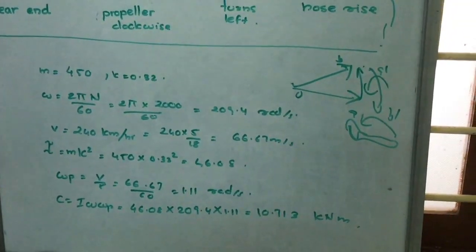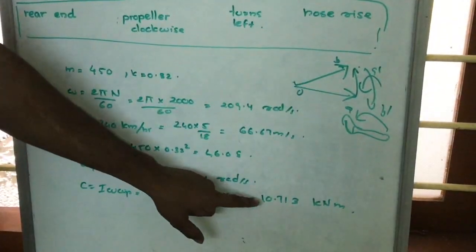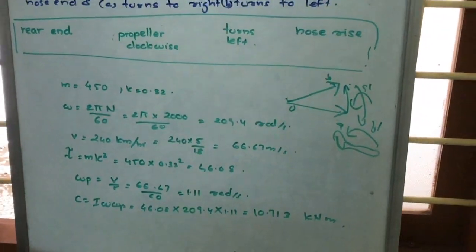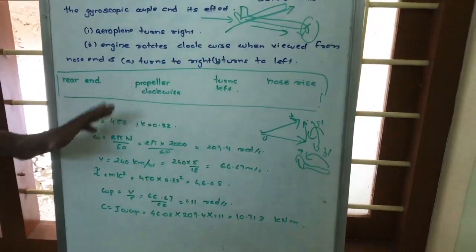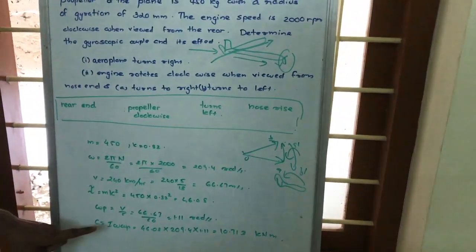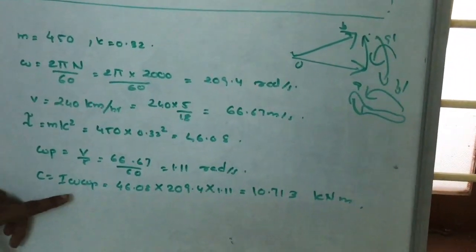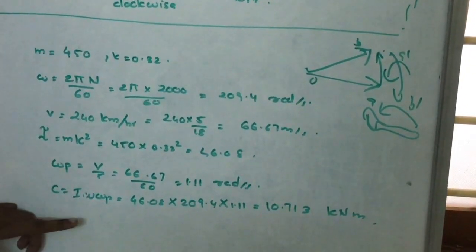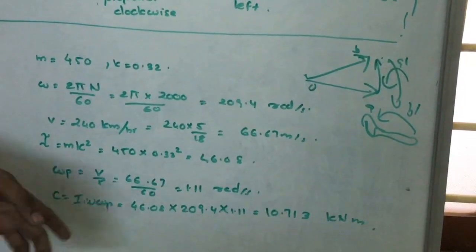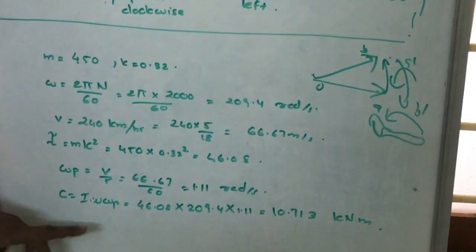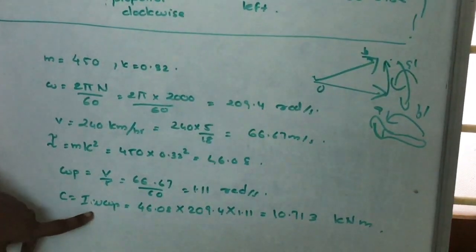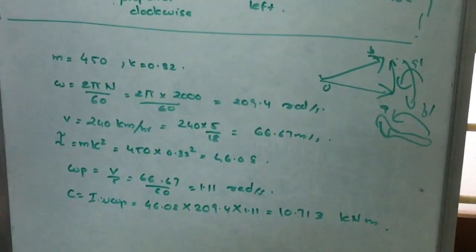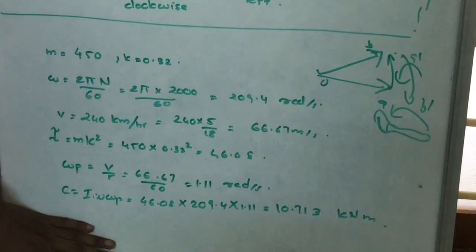Omega P is the angular velocity for the precession, equal to 1.01 rad/s. The gyroscopic couple C equals I × Omega × Omega P, where Omega is the angular velocity of the propeller. The propeller speed is 2000 RPM, so Omega = 2π × 2000 / 60. Multiplying I × Omega × Omega P gives us the gyroscopic couple due to the gyroscopic effect.